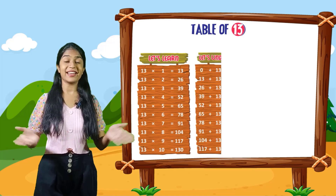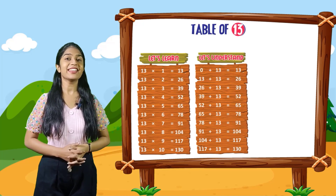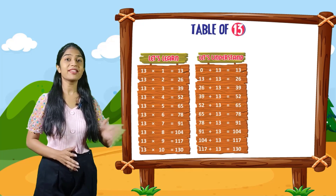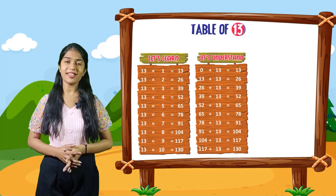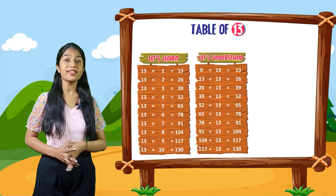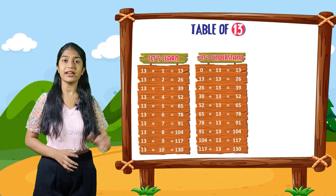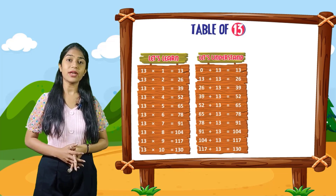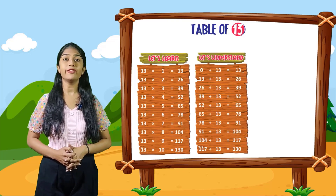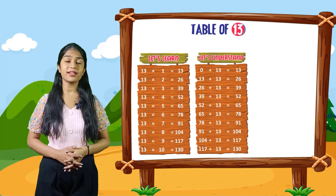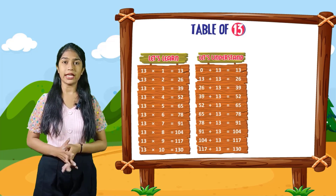So now let's understand. 0 plus 13 is equal to 13. 13 plus 13 is equal to 26. 26 plus 13 is equal to 39. 39 plus 13 is equal to 52. 52 plus 13 is equal to 65. 65 plus 13 is equal to 78. 78 plus 13 is equal to 91. 91 plus 13 is equal to 104. 104 plus 13 is equal to 117. 117 plus 13 is equal to 130.